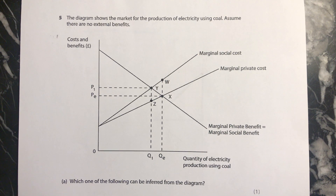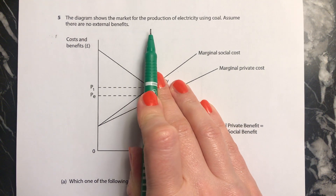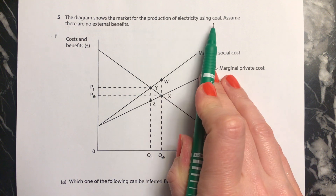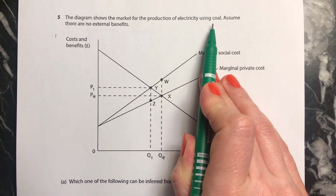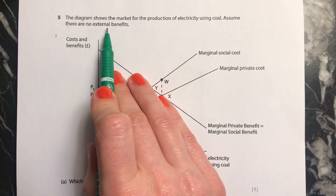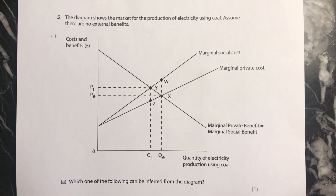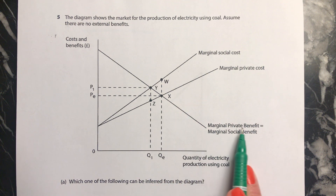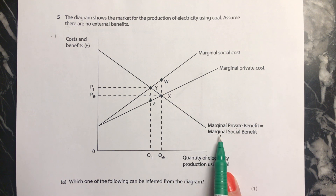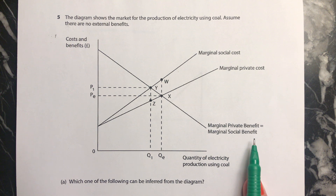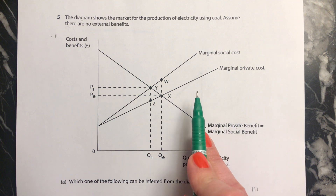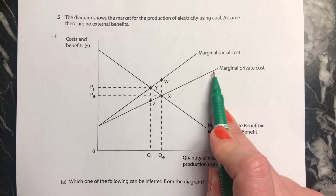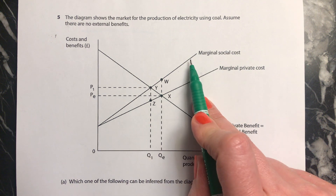This is question number five, looking at this cost-benefit diagram. It shows the market for the production of electricity using coal. They say assume there are no external benefits — you can tell this because there's only one benefit curve, and marginal private benefit equals marginal social benefit. So all we have are external costs, which is why we have both a marginal private cost curve and a marginal social cost curve.